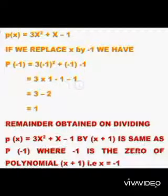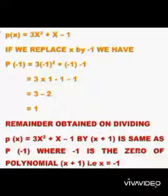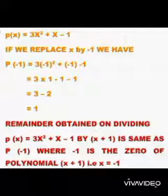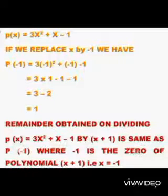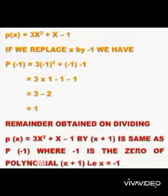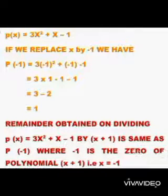Minus 1 and minus 1 will become minus 2. So 3 - 2 = 1. So children, what do you observe here? The remainder obtained on dividing P(x) = 3x² + x - 1 by x + 1 is the same as P(-1), where -1 is the zero of the polynomial x + 1.